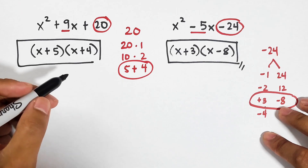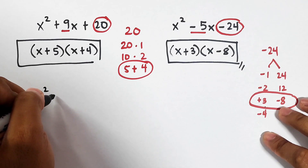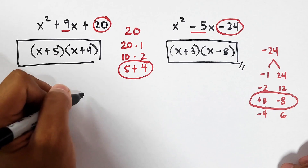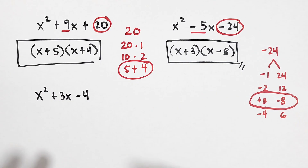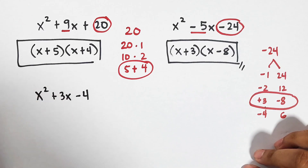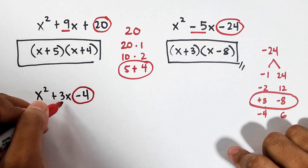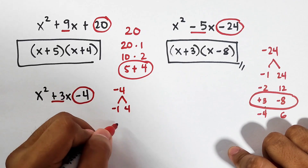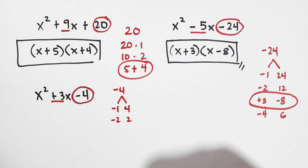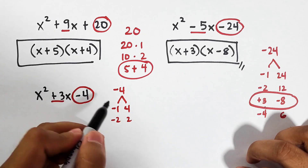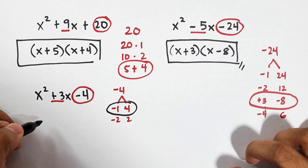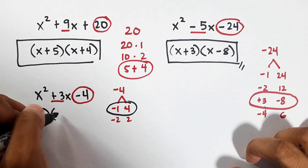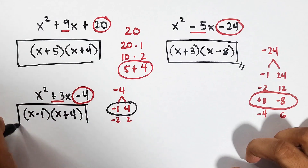Let's go with item number 4. We have x squared plus 3x minus 4. You can pause the video and check whether your answer is correct. We need to think of the factors of negative 4 that will add up to positive 3. The factors are negative 1 times 4 and negative 2 times 2. The only pair that gives a sum of positive 3 is negative 1 and 4. So the factors are x minus 1 times x plus 4.